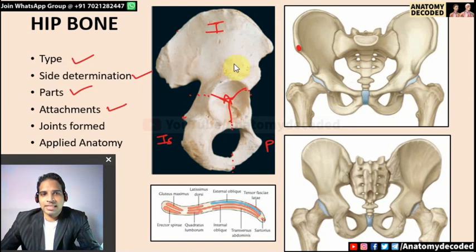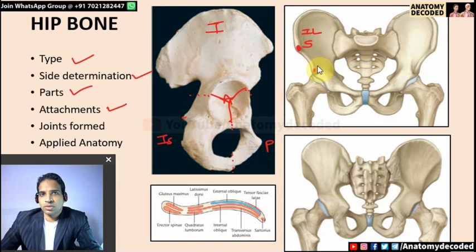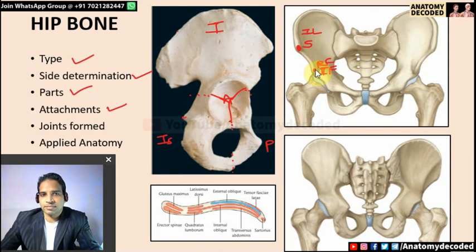For attachments of the ilium: the anterior superior iliac spine gives attachment to sartorius muscle and the inguinal ligament. Two structures are attached on the anterior inferior iliac spine: the straight head of rectus femoris muscle and the ilio-femoral ligament (also called ligament of Bigelow). Note: at the ASIS the ligament is superior and muscle inferior, but this is reversed at the AIIS.